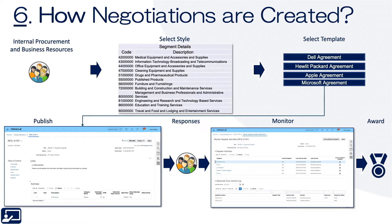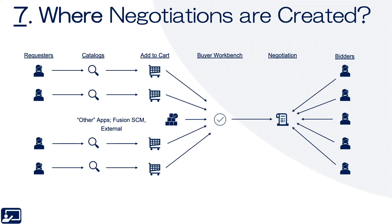Once you have your style or template, you publish it. Your suppliers — prospective or spend-authorized — respond, you can monitor those responses, and then ultimately you select the award. On the where side, requesters submit non-catalog lines to a cart, those carts go through buyer workbench, and a buyer pulls those lines into a negotiation. If pulled into a template, the lines are pre-populated and just need editing before going out to bidders who respond, then monitor and award.